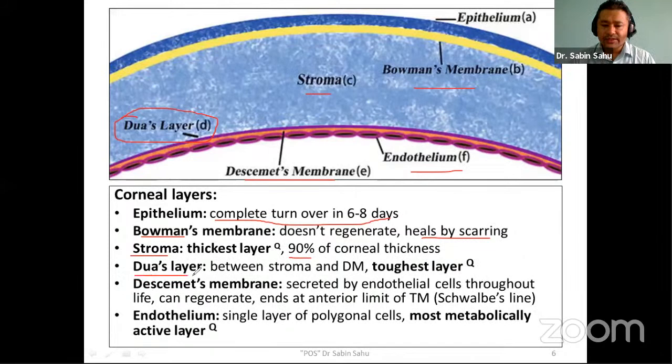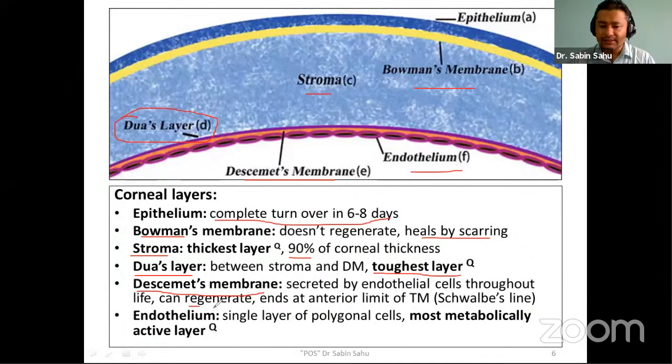Next is the Dua's layer, which lies between stroma and Descemet's membrane, and this is the toughest layer. Previously, Descemet's membrane was thought to be the toughest layer, but nowadays it is considered to be the Dua's layer. Descemet's membrane is secreted by endothelial cells throughout life and can regenerate. It ends at the anterior limit of the trabecular meshwork, which corresponds to Schwalbe's line — an important landmark during trabeculectomy glaucoma surgeries.